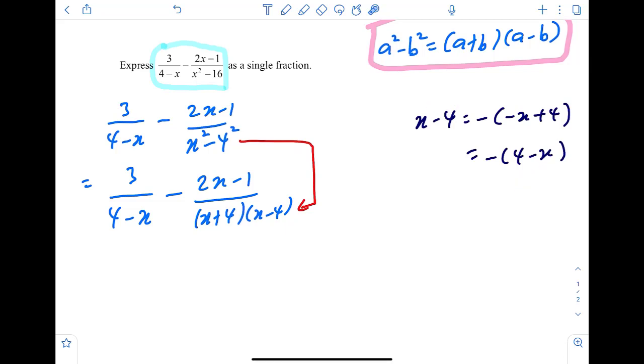Negative times negative indeed gives you a positive x, negative times positive indeed gives you a negative 4. So negative 4 minus x. So this is equal to 3 over 4 minus x, minus 2x minus 1 over.